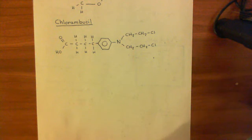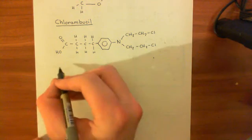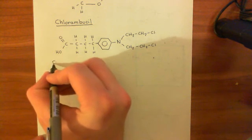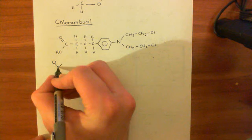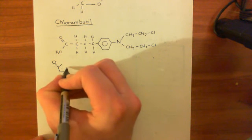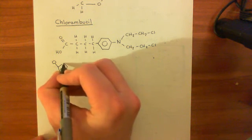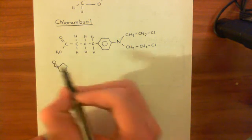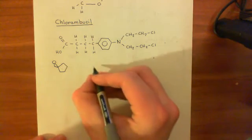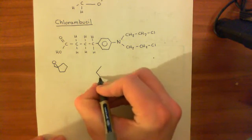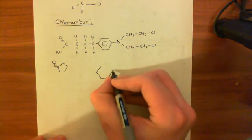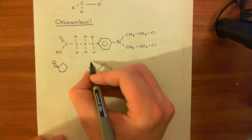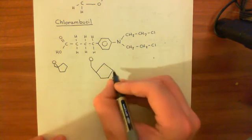Just to remind you of the basic structure of DNA: what we have is two strands which are complementary. Here is the sugar-phosphate backbone, made up of these ribosugars with phosphate groups. Off each one of these ribosugars, you have an organic base.